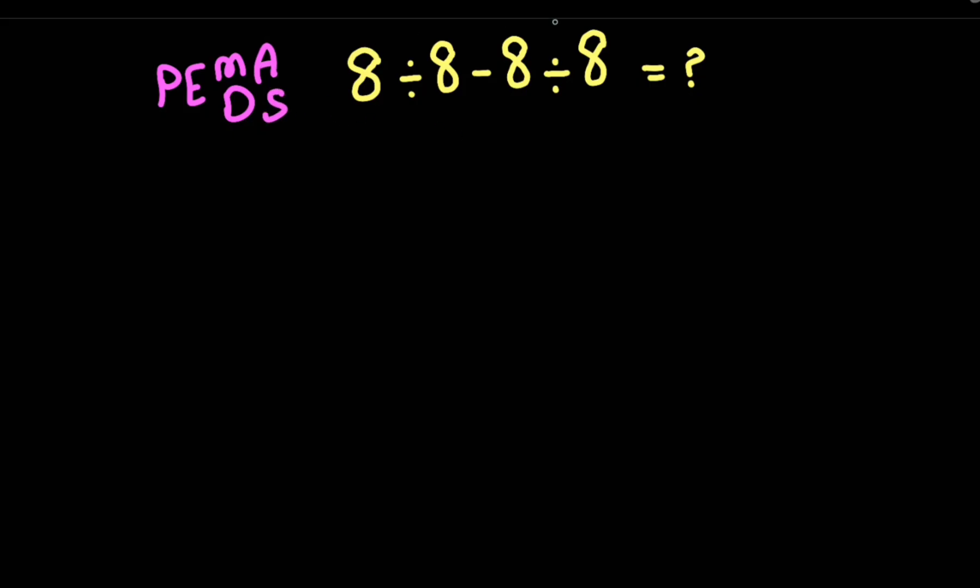PEMDAS: we have to solve this math expression in this way. First parentheses, then exponent, then multiplication and division, and then addition and subtraction. According to this rule, we have two divisions here that we have to solve them first.